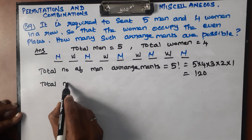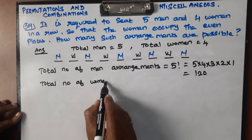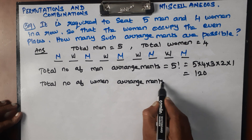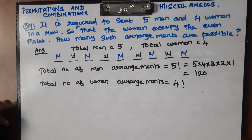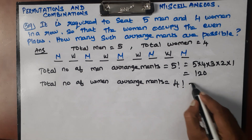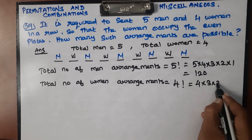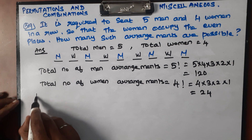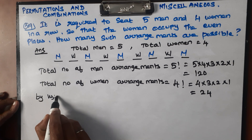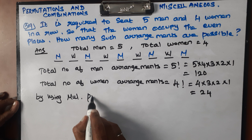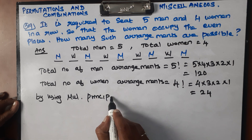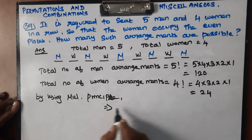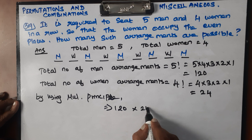Total number of women arrangements: the total number of women is 4 factorial. So 4 × 3 × 2 × 1 equals 24 — 4 threes are 12, 12 twos are 24. Now, by using the multiplication principle, we multiply: 120 × 24 to get the answer.